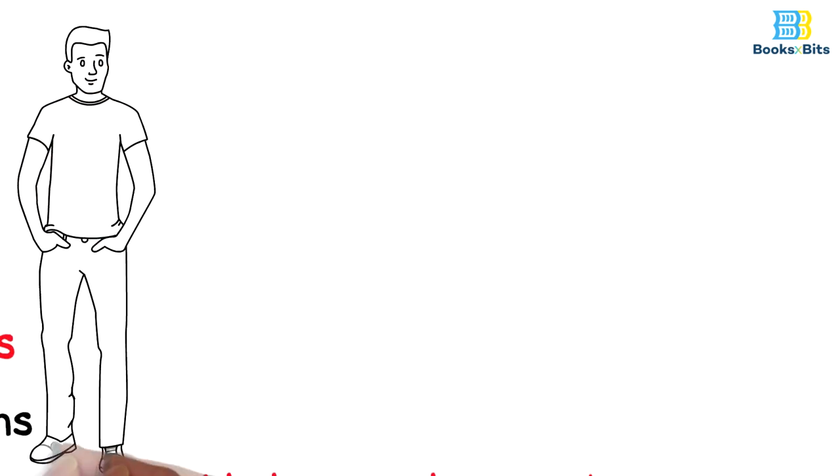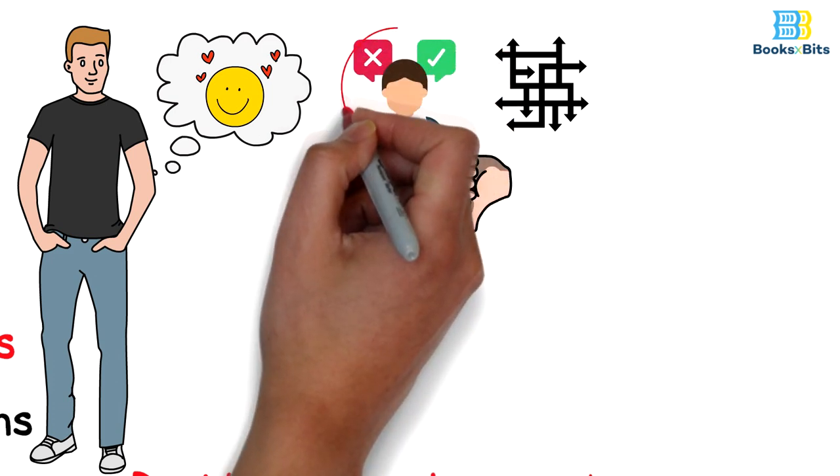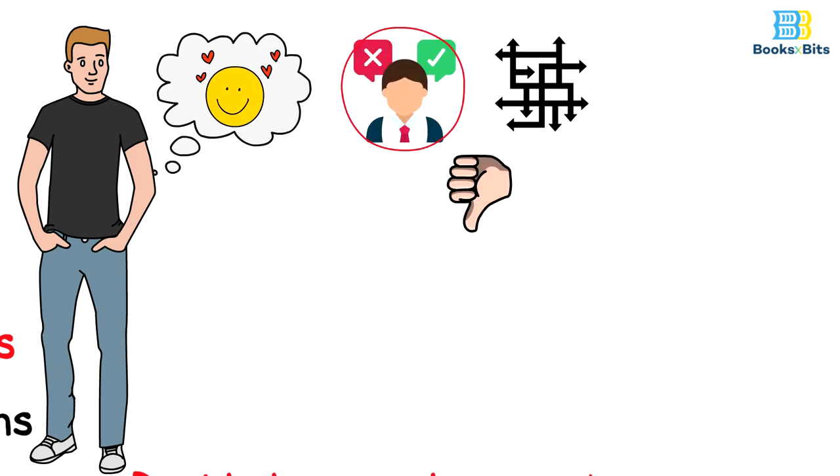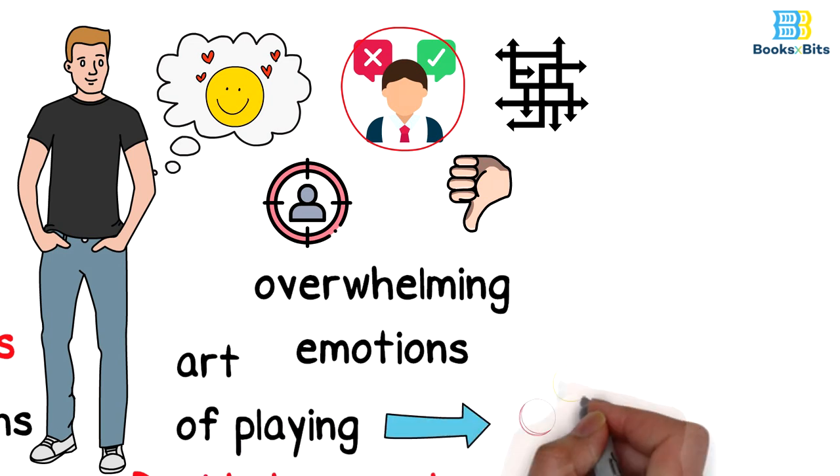Our problem in this life as humans is that we are perfectly emotional beings, and most of our decisions are random or away from logic and reason. This confirms what the author indicated, that we are not very good at making our various decisions. As long as the controller of all these decisions is the overwhelming emotions, then we become an easy prey for those who master the art of playing on feelings and emotions.